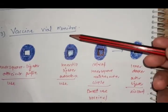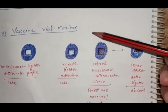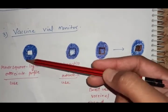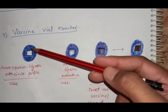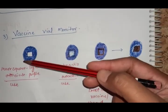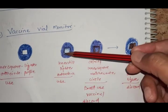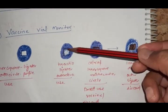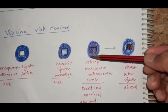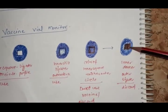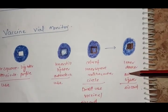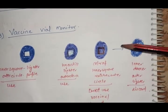Third is vaccine vial monitor. There is one circle outside and a square inside. If the inner square is lighter than the outer circle, use the vaccine. If the inner square matches or is getting darker than the outer, discard the vaccine. These are the cold chain monitoring equipment for checking whether cold chain is maintained.